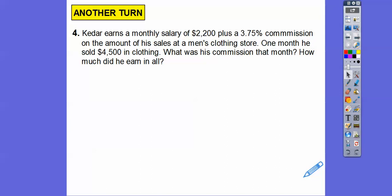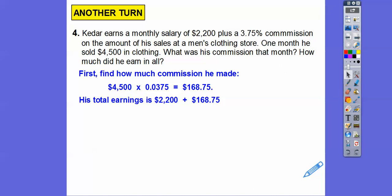All right, Kedar earns a monthly salary of $2,200 plus a 3.75% commission on the amount of his sales at a man's clothing store. So the commission is how much money he makes on the sales that he does. One month, he sold $4,500 in clothing. So what's his commission on that month, and how much did he earn in all? So remember, he already earns for just going there $2,200, and then the more he sells, the more commission he earns on top of that. So let's find the commission. This in decimal is 0.0375. So we're going to find 0.0375 times 4,500. He gets $168.75. So his total earnings is going to be that $2,200 plus $168.75. So he's going to have $2,368.75 take home.